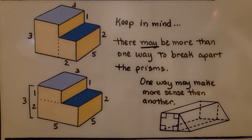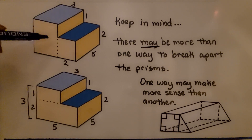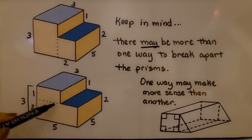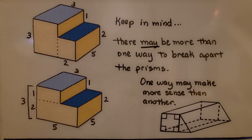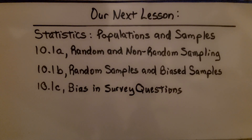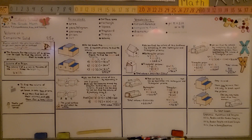Keep in mind there may be more than one way to break apart the prisms. This one can be broken apart vertically with a prism here and a prism here, or broken apart horizontally. One way may make more sense than another. We may come across a prism that needs to be broken into a rectangular prism and a triangular prism — just use common sense. We're finished with module nine and moving on to module ten, which is about statistics and random versus non-random sampling. Try to remember to use logic and common sense. Have a wonderful day.